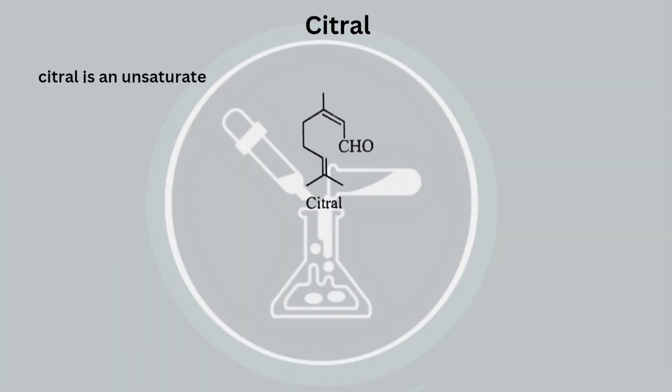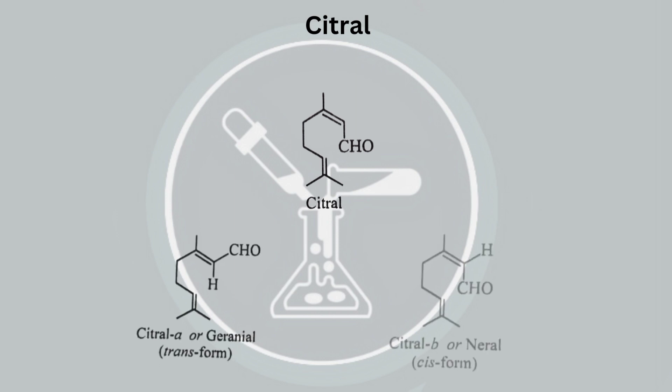From a chemical perspective, citral is an unsaturated aldehyde with two isomers: geraniol, a trans form of citral, and nerol, a cis form of citral.